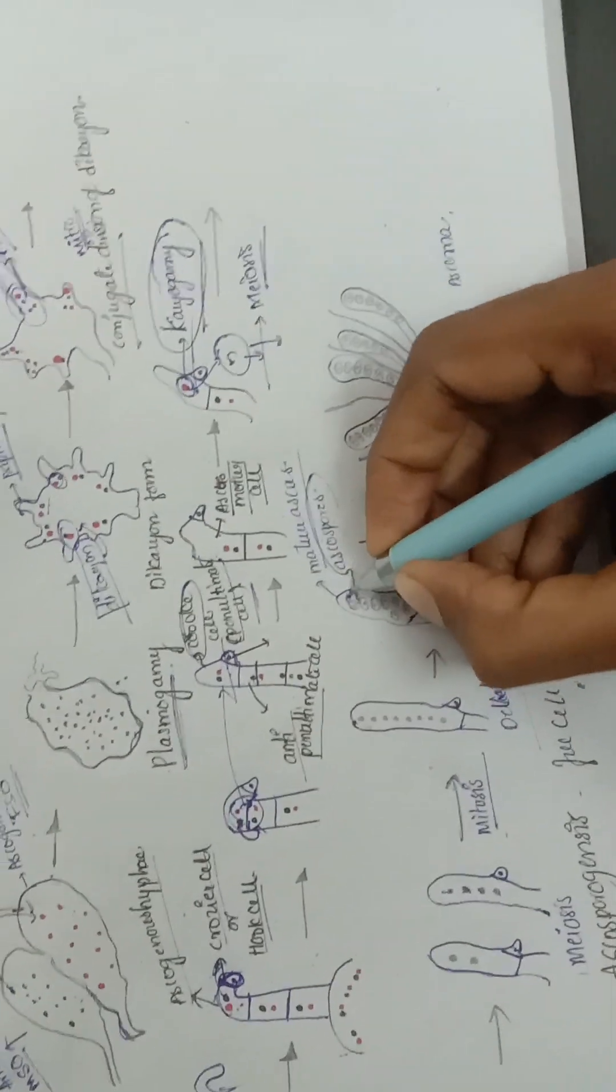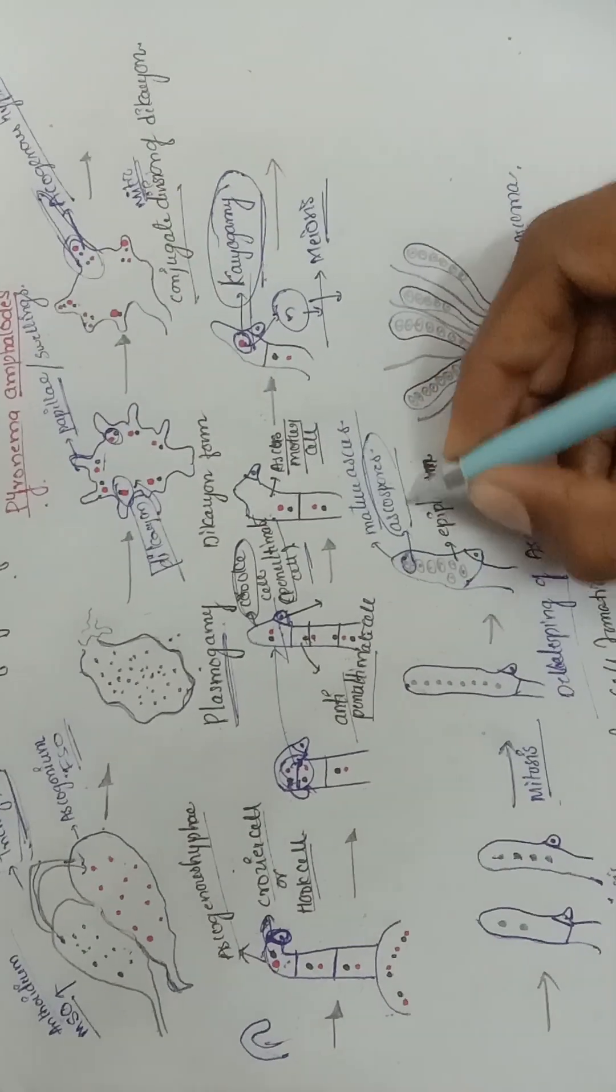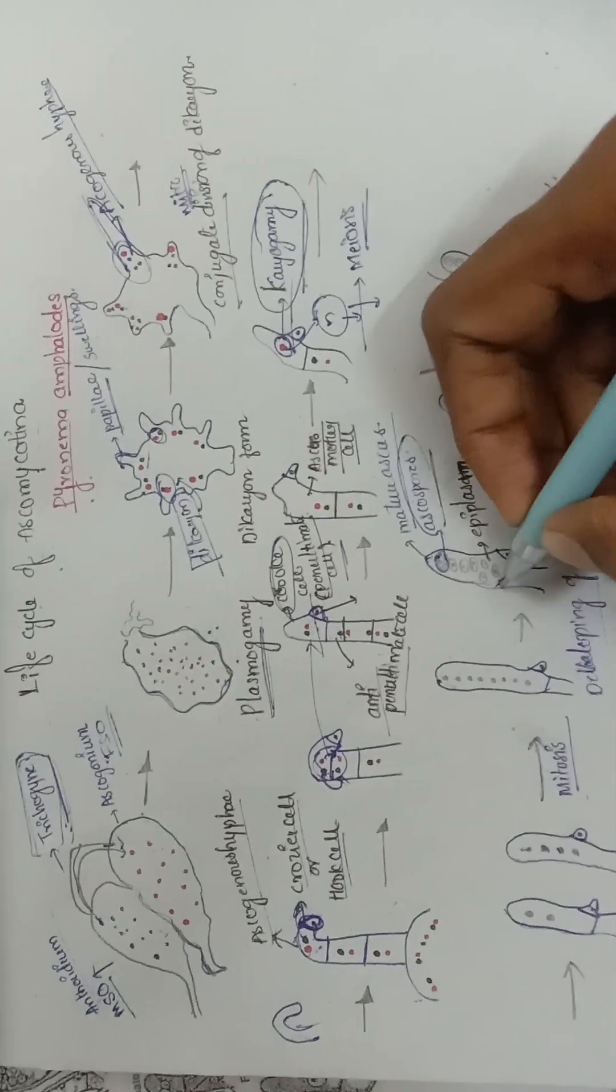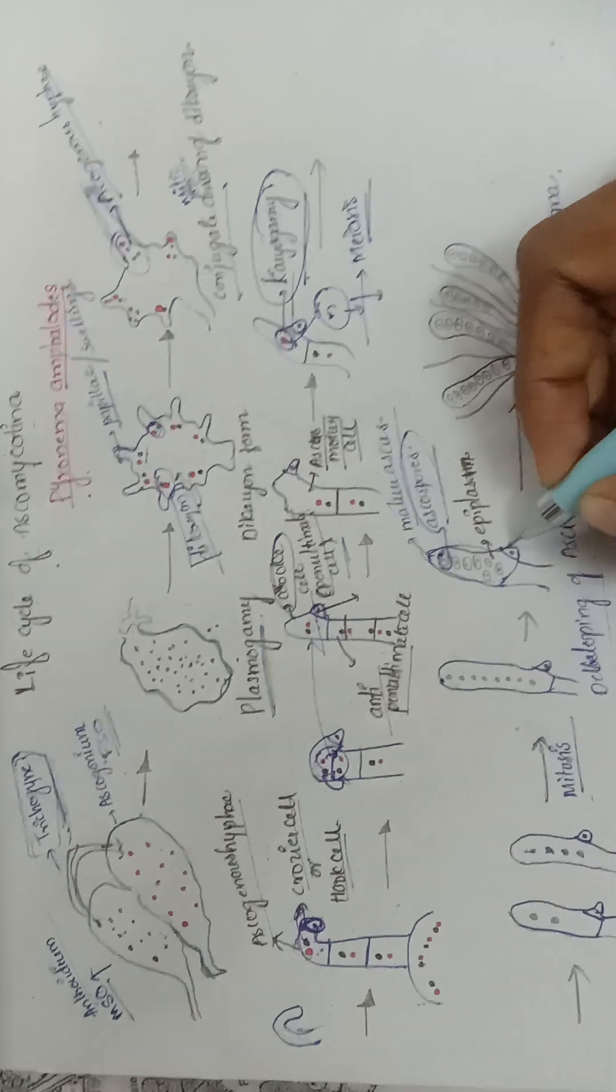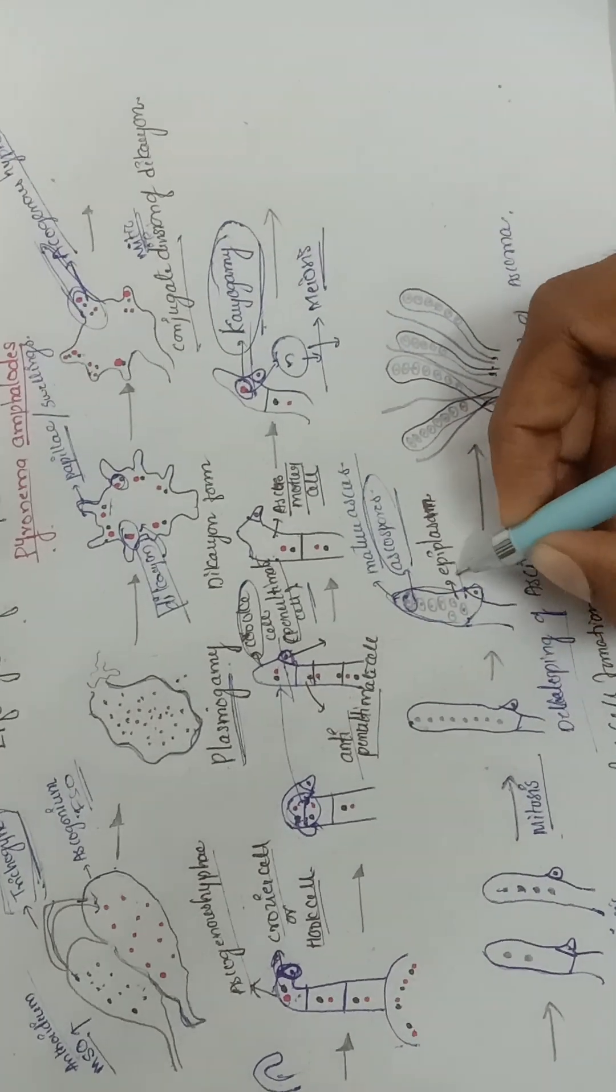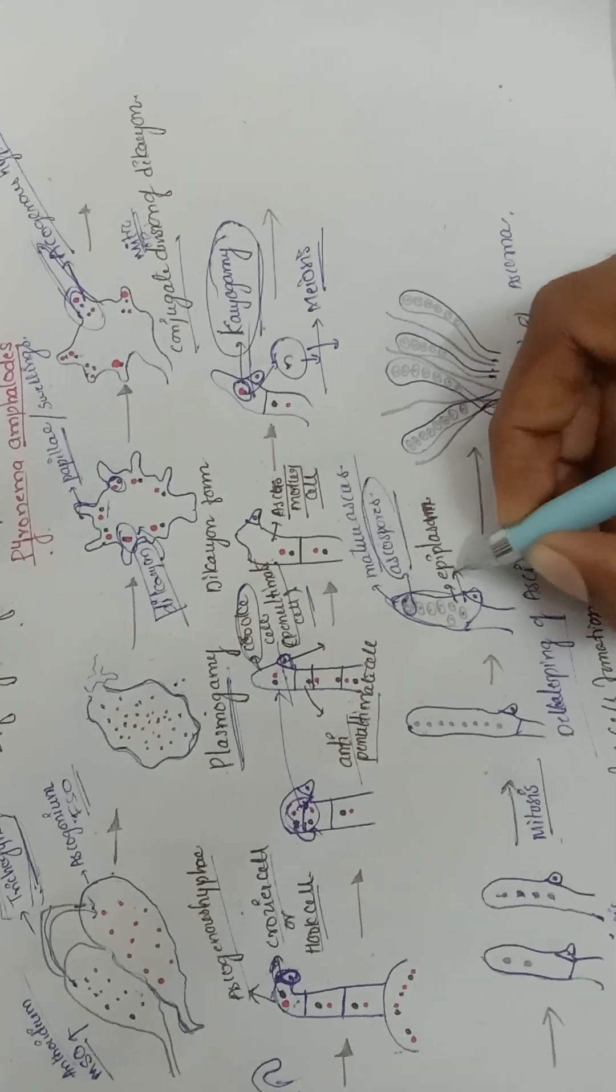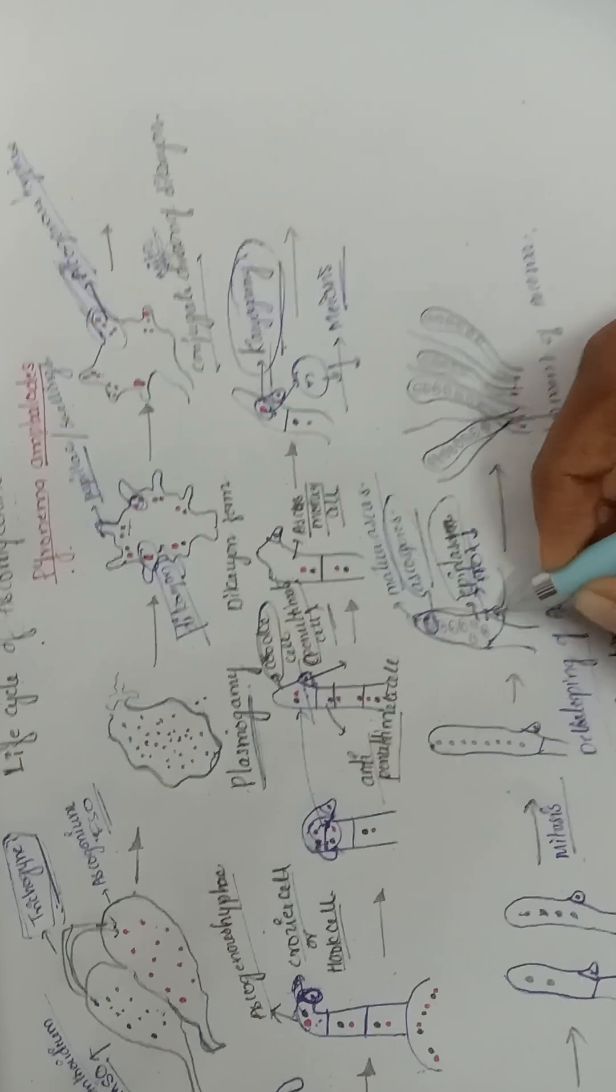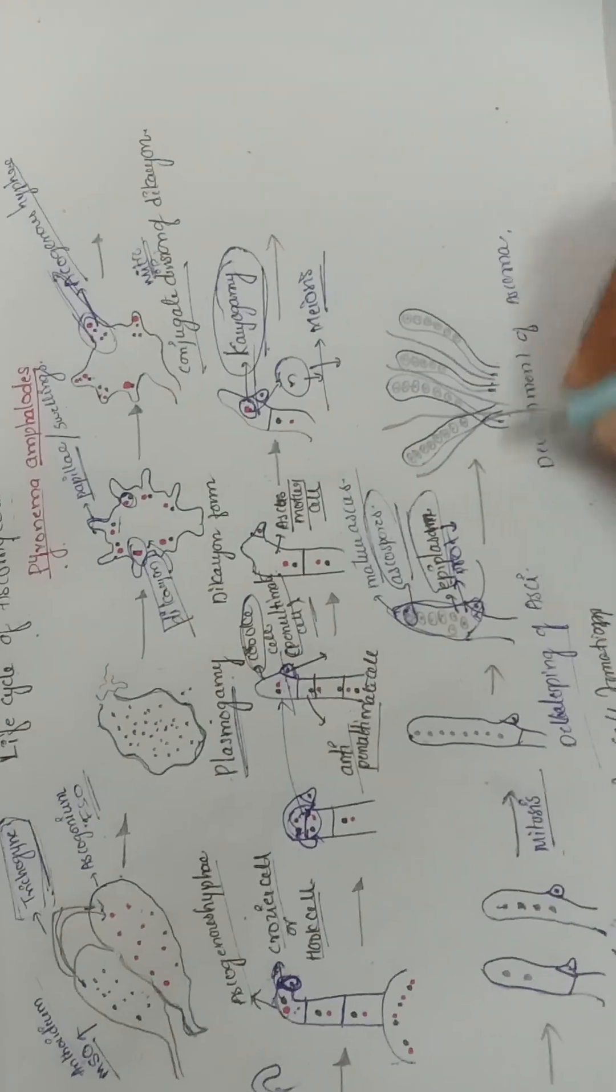Free cell wall formation takes place and results in the ascospores. The ascus mother cell forms into the ascus. The extra excess protoplasm is called epiplasm, and this epiplasm feeds the ascospores.